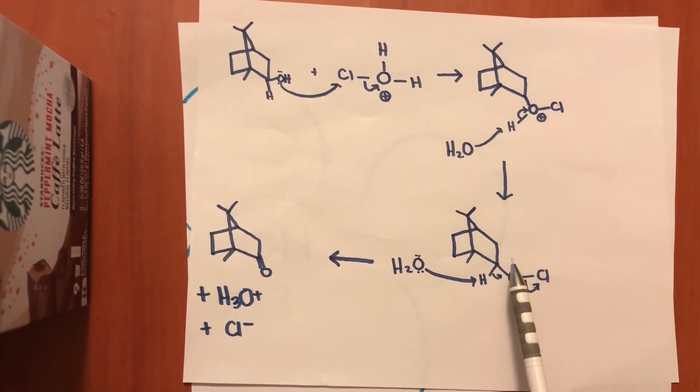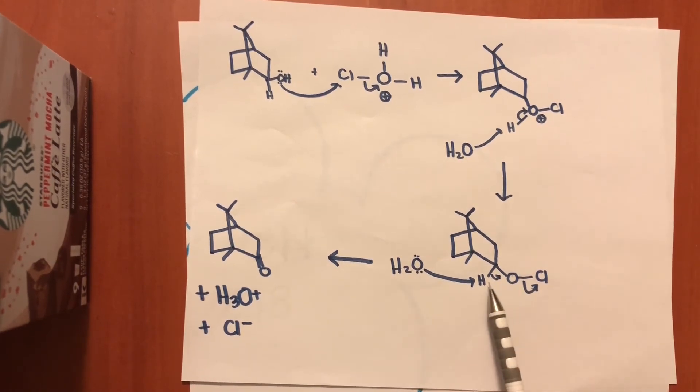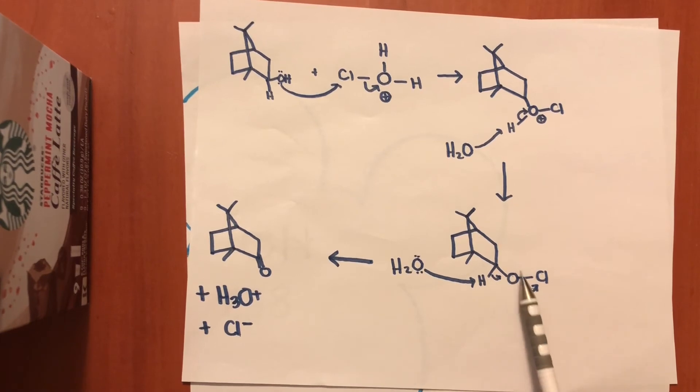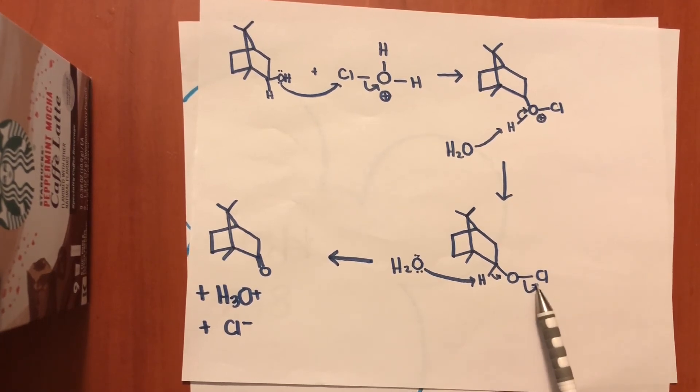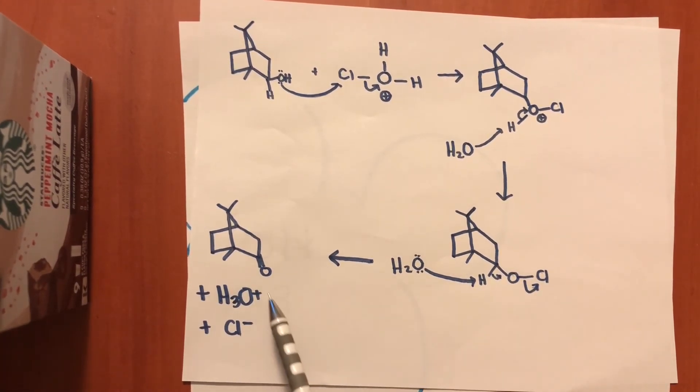The newly formed intermediate will now have another water molecule come and take off this hydrogen. The electrons come back in, the chlorine leaves with these electrons and it forms this ketone. This is now our camphor molecule along with hydronium and chloride.